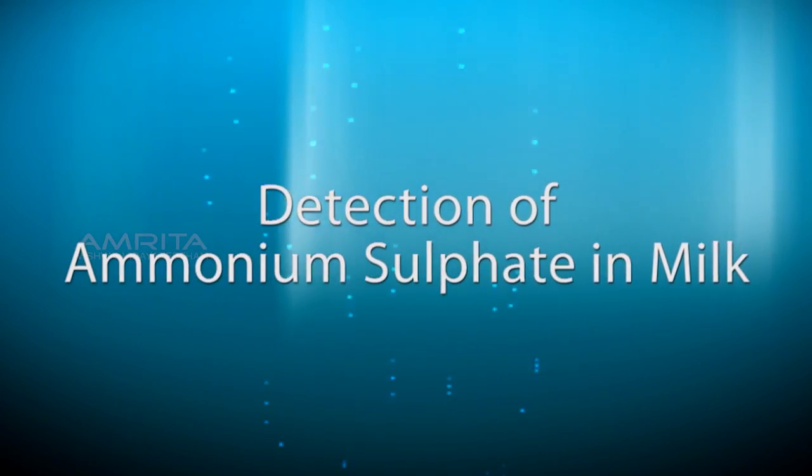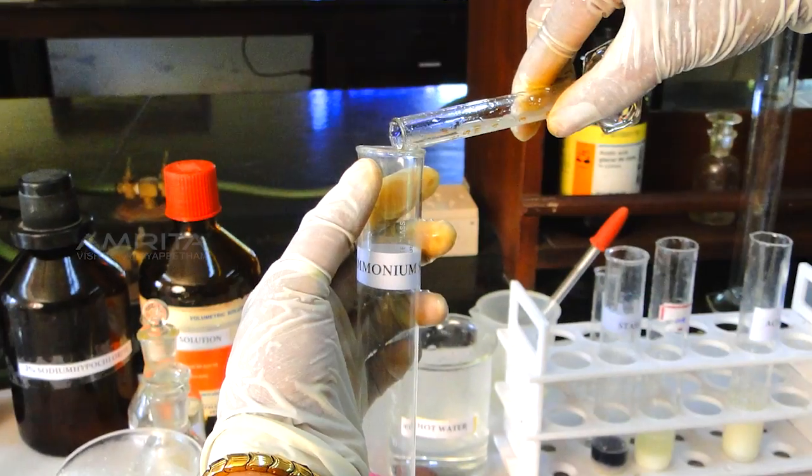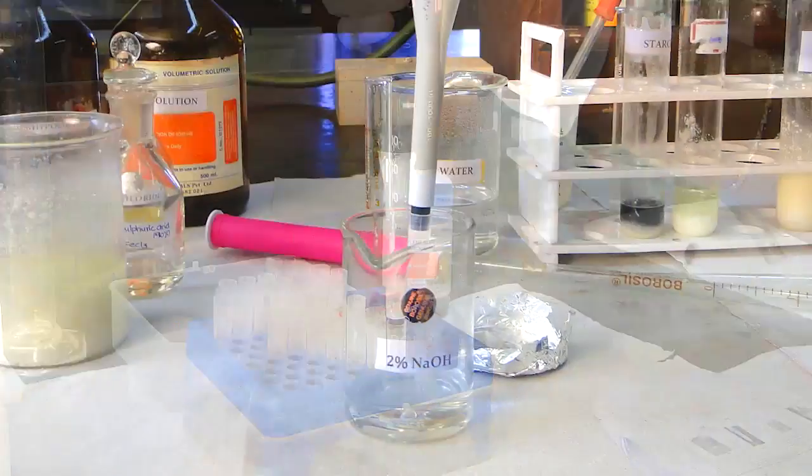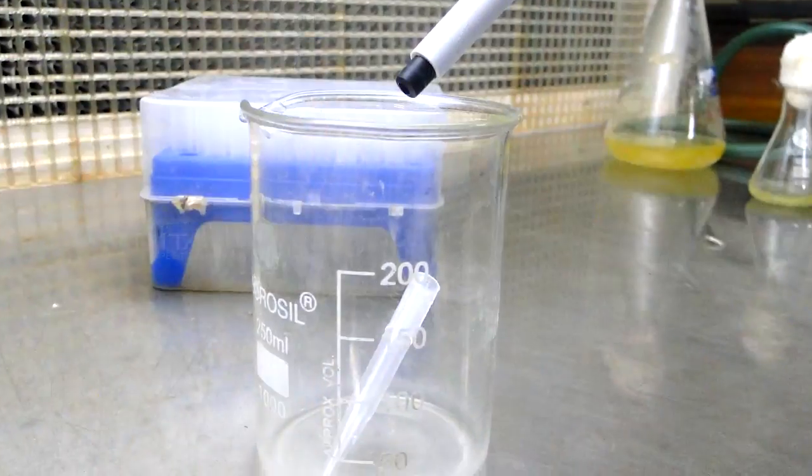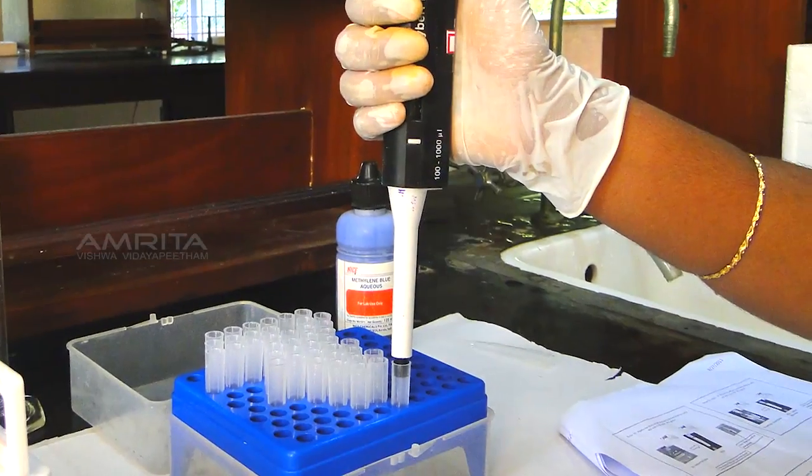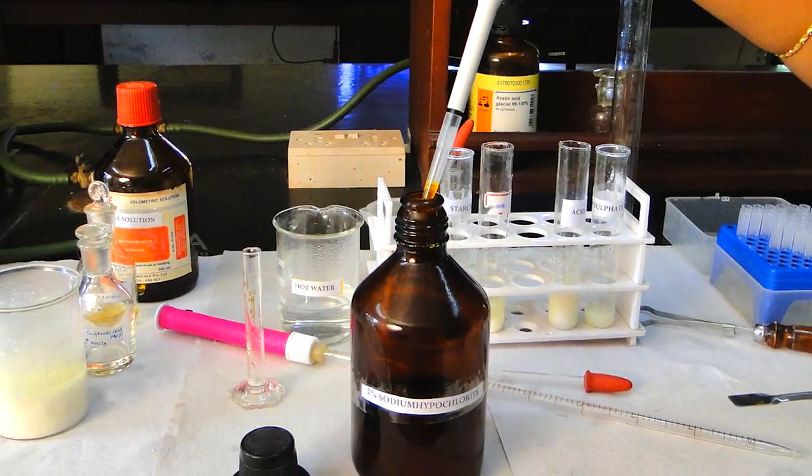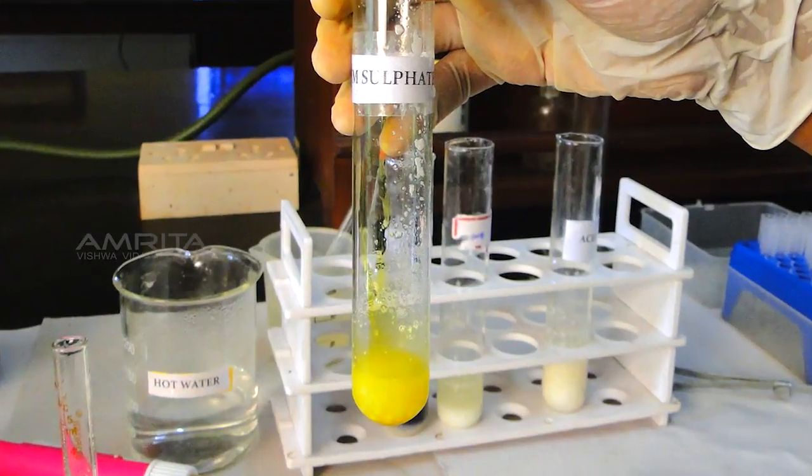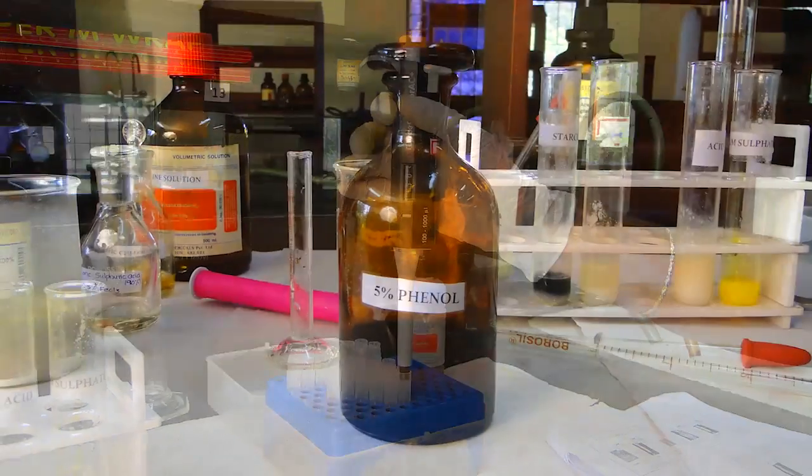Detection of ammonium sulphate in milk. Pour 1 ml milk into a test tube labeled ammonium sulphate. Pipette out 500 microliters of 2% NaOH solution and add this to the test tube. Discard the used tip and insert a new tip. Pipette out 500 microliters of 2% sodium hypochlorite and add this to the milk solution. You will notice that the color has turned light yellow. Insert a fresh tip and add 500 microliters of phenol solution and mix this well.